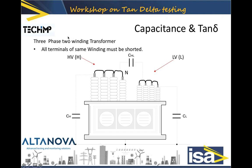For a three-winding transformer with primary and secondary sides, we effectively need to measure three capacitances: CH — the capacitance between the high voltage winding and ground; CL — the capacitance between the low voltage winding and ground; and CHL — the capacitance between the high voltage winding and the low voltage winding.